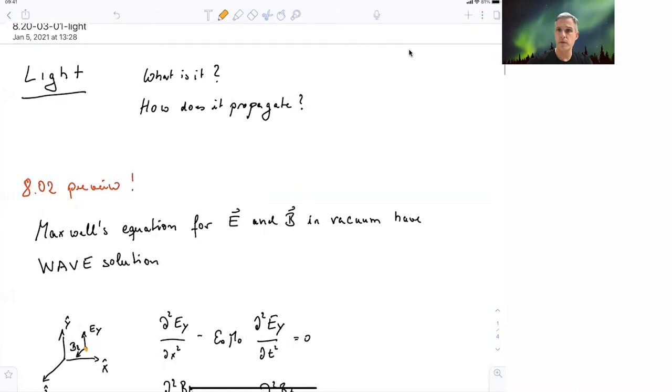So if we study 802, we'll see Maxwell's equations are being developed in there. We look at Maxwell's equations for electric and magnetic field E and B in vacuum. We can rewrite the Maxwell's equations and we find wave equations.